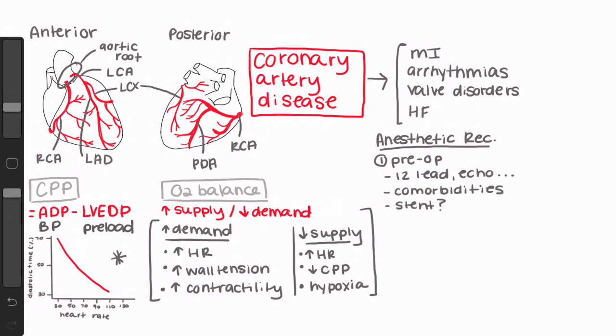Ask if they've ever had a stent placed and when was the last time they had chest pain, and if they've had chest pain, what did they do to relieve it? It's also a good idea to assess their metabolic equivalents, or METs, by asking them about activity tolerance. Then be sure to check when the last time they took medications like beta blockers, other antihypertensives, antiarrhythmics, blood thinners, and PRN nitros.